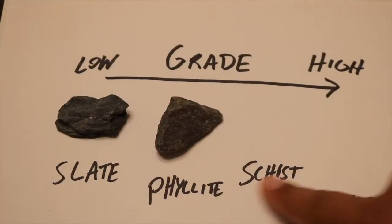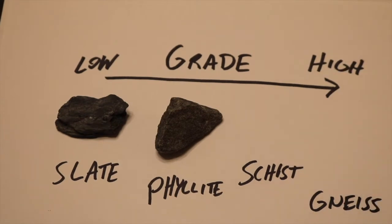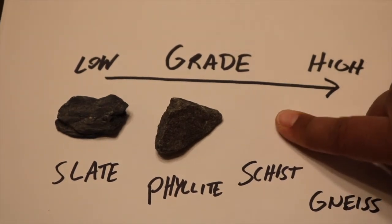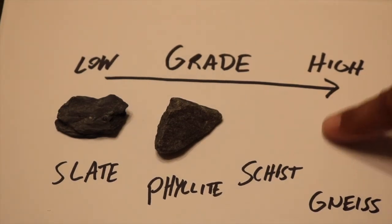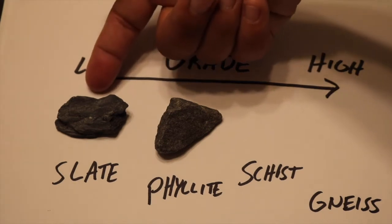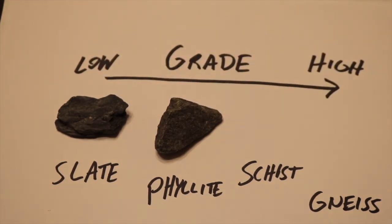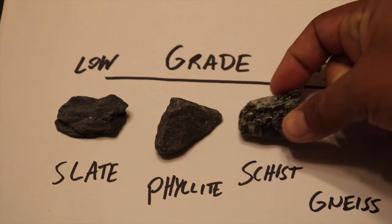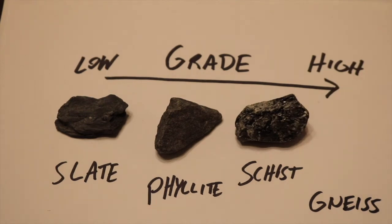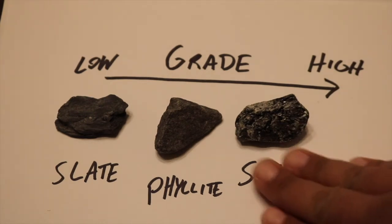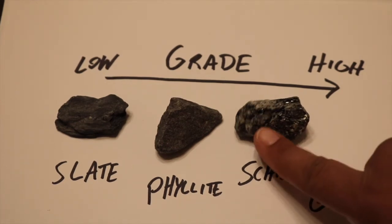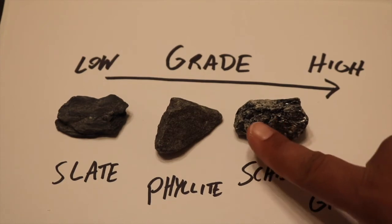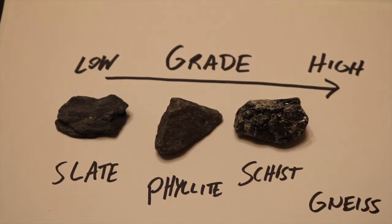If we move up in our grading scale, the next one is schist, which is a rock that forms under medium to low grade metamorphism. Not as high temperature and pressure as gneiss, but higher than slate and phyllite. In your box, you have two different examples of schist: a mica schist and a chlorite schist. Both form under similar temperatures and pressures, but the mica schist forms under slightly higher temperatures and pressures than chlorite schist.